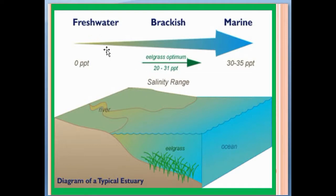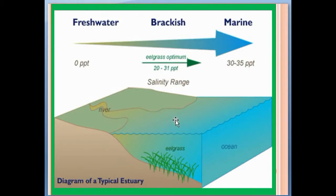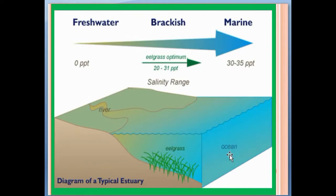This picture shows the salinity of an aquatic system. As you can see, this is the fresh water, which is a river — rivers always have fresh water. When a river meets the ocean, it forms an estuary at the mouth of the river. That water is brackish water in the estuary, and then this is ocean or marine water, with 30 to 35 PPT salinity.